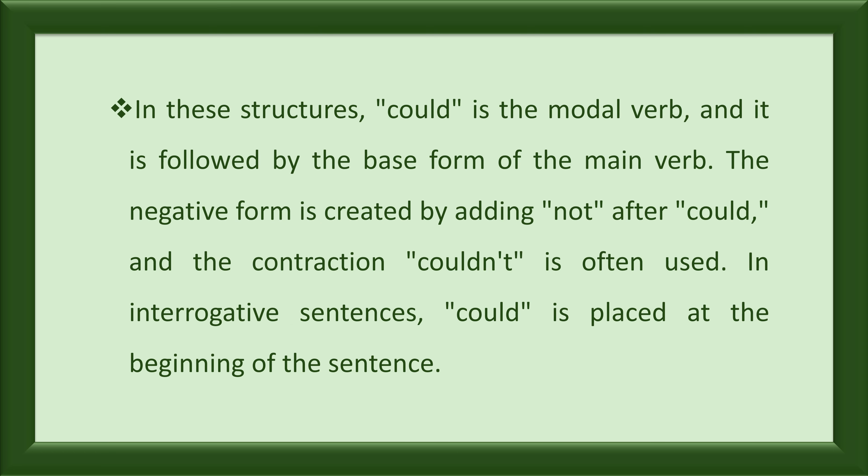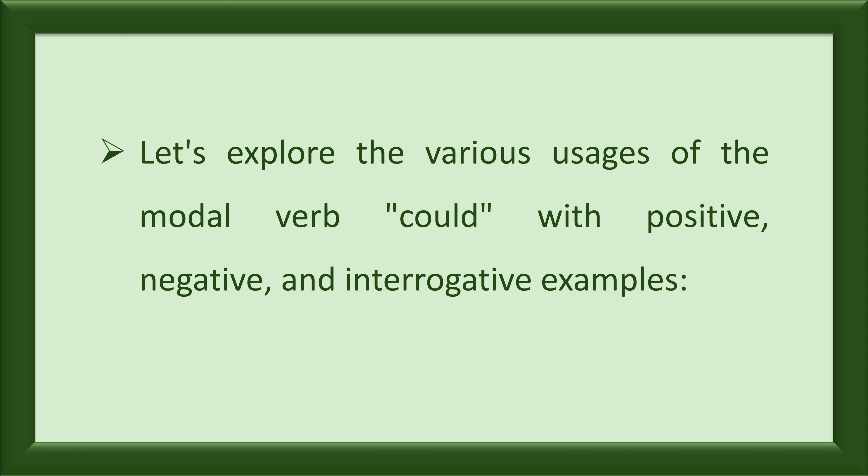In these structures, could is the modal verb, and it is followed by the base form of the main verb. The negative form is created by adding not after could, and the contraction couldn't is often used. In interrogative sentences, could is placed at the beginning of the sentence. Let's explore the various usages of the modal verb could with positive, negative, and interrogative examples.